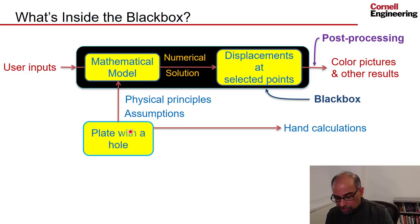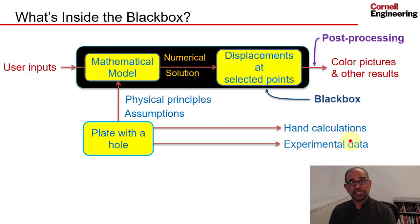We can take a look at the physical problem and make some hand calculations based on approximating the mathematical model or an analytical solution to the mathematical model. So I'll review what those hand calculations are. In this case, we also have experimental data. You can find experimental data from others tabulated in textbooks, and in the Cornell course for which I'm developing this module, students have experimental data from digital image correlation.